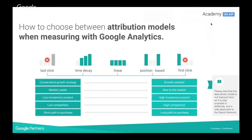There are different attribution models available when measuring with Google Analytics. We have the last click model and first click model, which are becoming more obsolete because they don't give us the right story. The ones we want to look at are time decay, linear, and position-based models, which are available on Google Analytics.